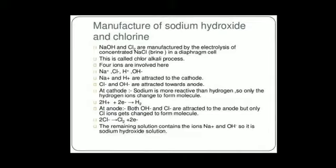The raw material for the manufacturing of sodium hydroxide is sodium chloride, which we commonly call table salt or common salt. When electricity is passed through an aqueous solution of sodium chloride — which we call brine — it decomposes to form sodium hydroxide. This process is called the chlor-alkali process, because of the products formed: chlor for chlorine and alkali for sodium hydroxide.